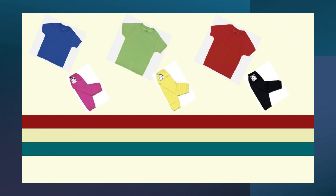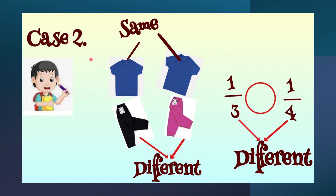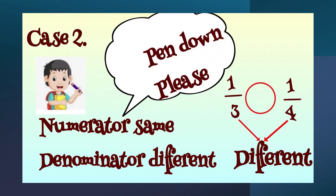Here we can see three different colored t-shirts and three trousers. In this case two of comparing fractions, the t-shirts on the top are the same and the trousers on the bottom are different. So in fractions, the numbers on top are the same — that means the numerators are same. Whereas the pants colors are different, and so are the denominators. We are discussing the case when the numerator is the same but the denominator is different.